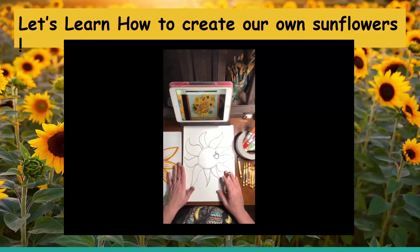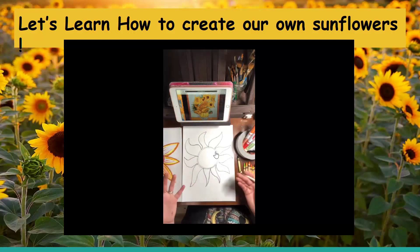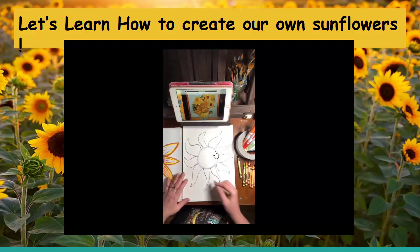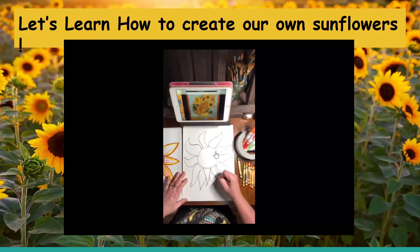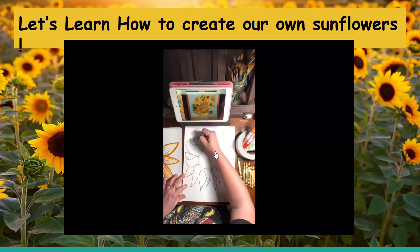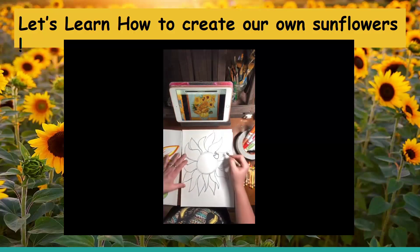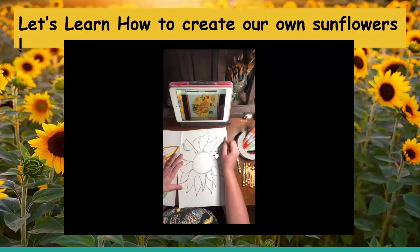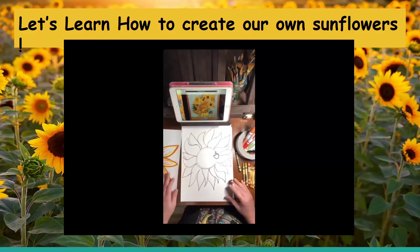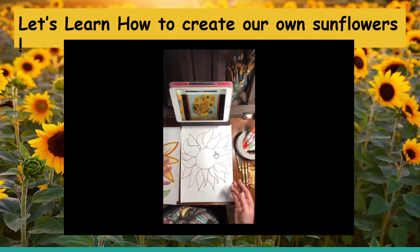It looks like something you would see in nature. So if you're going to do one big sunflower, you could do it like that. I could go back in and even add some more organic shape petals between to fill in my spaces. That looks like fun — almost looks like a sunflower on fire.